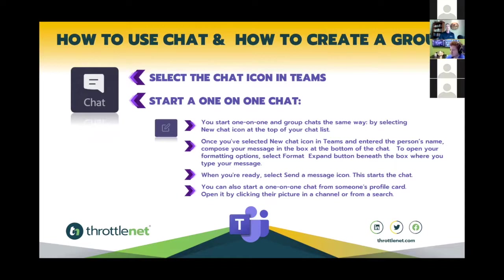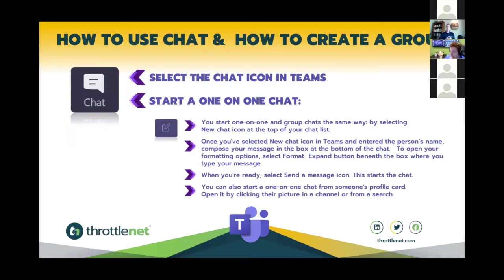To start a one-on-one chat, select the new chat icon at the top of your chat list, enter the individual's name, then begin composing your message in the text box at the bottom. You also have formatting options. When ready, hit the send icon — a little arrow in the lower right corner of the text box. You can also start a one-on-one chat from someone's profile card by clicking their picture in a channel, or by doing a general search.